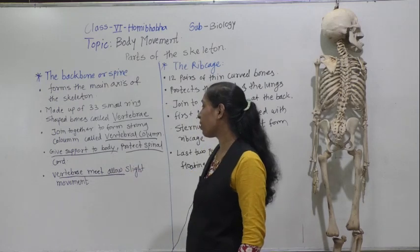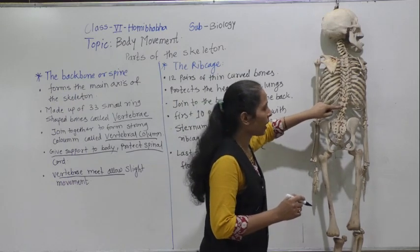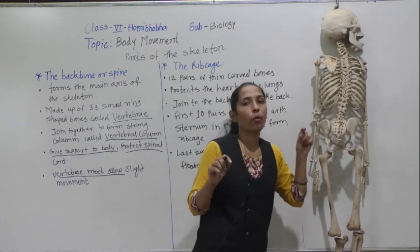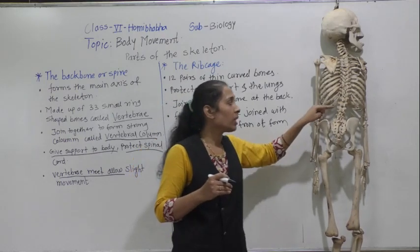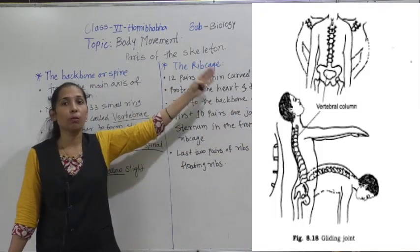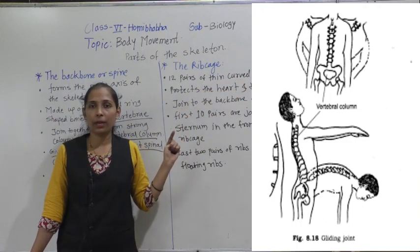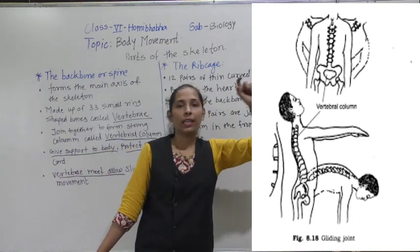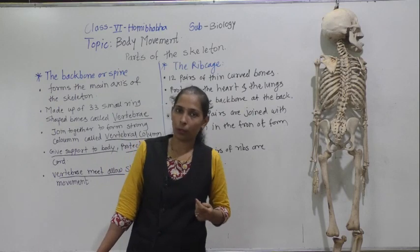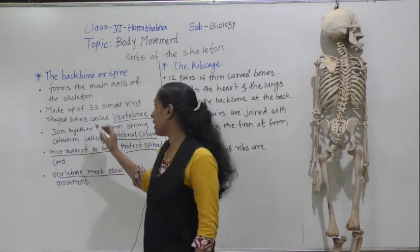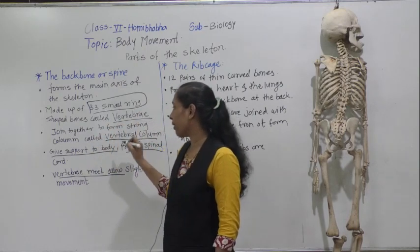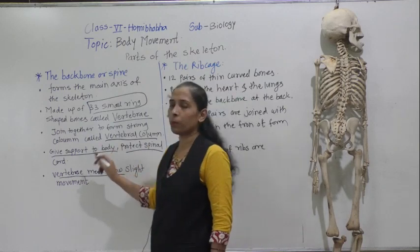The joints where the vertebrae meet allow slight movement. Between two vertebrae there is a small space, and at those points slight movement is allowed. This slight movement helps us to bend forward and backward. Because the place where two vertebrae meet allows slight movement, we can perform certain movements of the backbone.